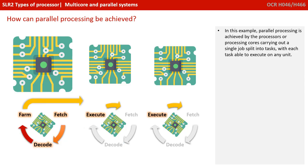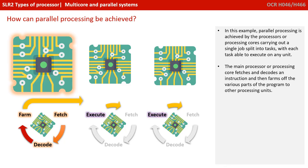In this example, parallel processing is being achieved by the processor or processing cores carrying out a single job split into tasks, with each task able to execute on any unit. The main processor or processing core fetches and decodes an instruction, and then farms off the various parts of the program to the other processing units.